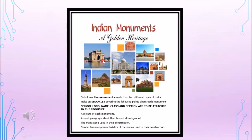It's time to do an activity. Select any five monuments made from two different types of rocks and make an e-booklet covering the following points about each monument: include the school logo, name, class, and section; attach a picture of each monument; write a short paragraph about its historical background; mention the main stone used in its construction; and note the special features or characteristics of the stones used. Enjoy this activity.